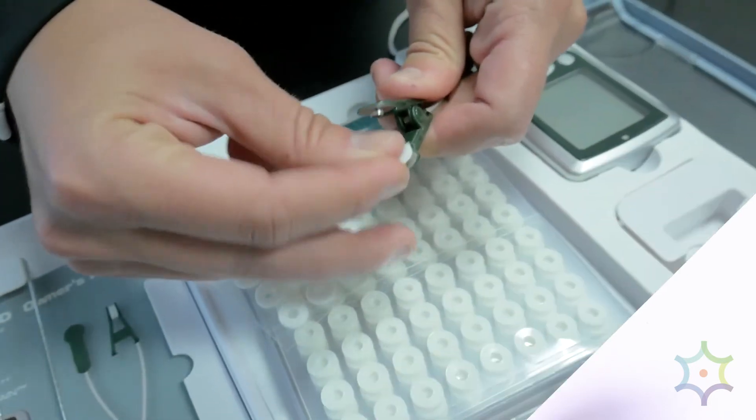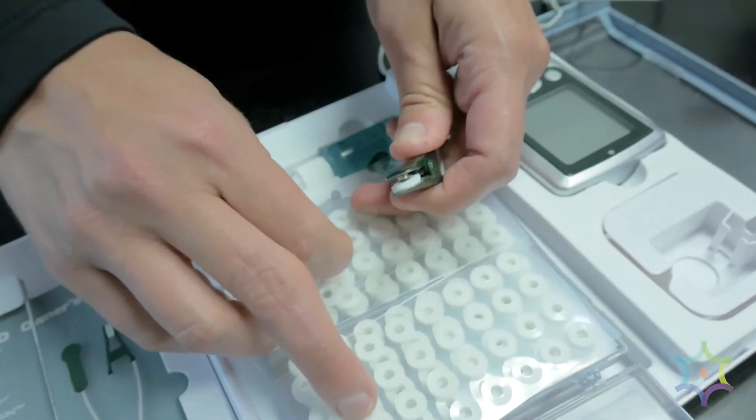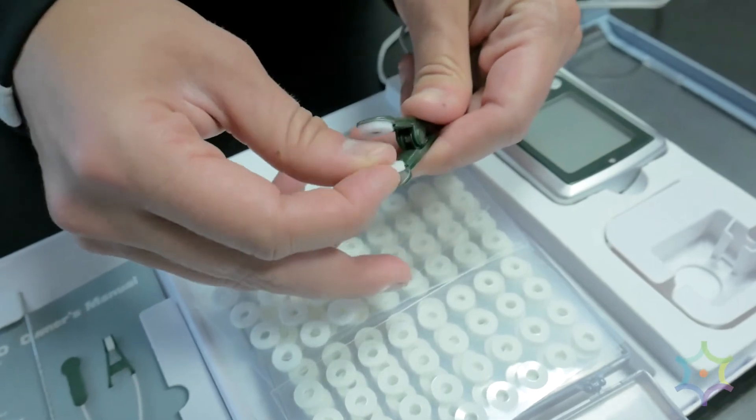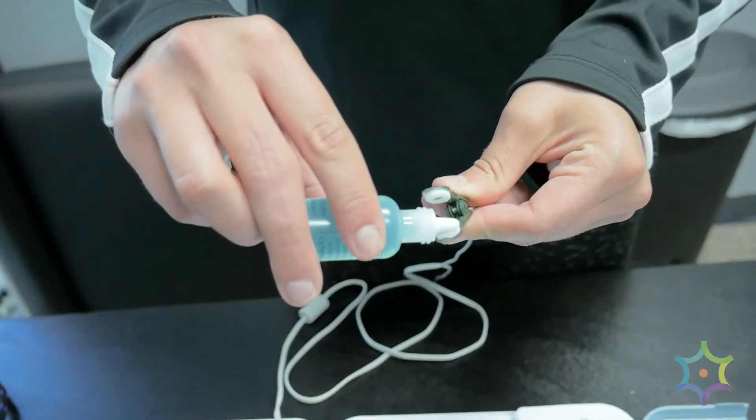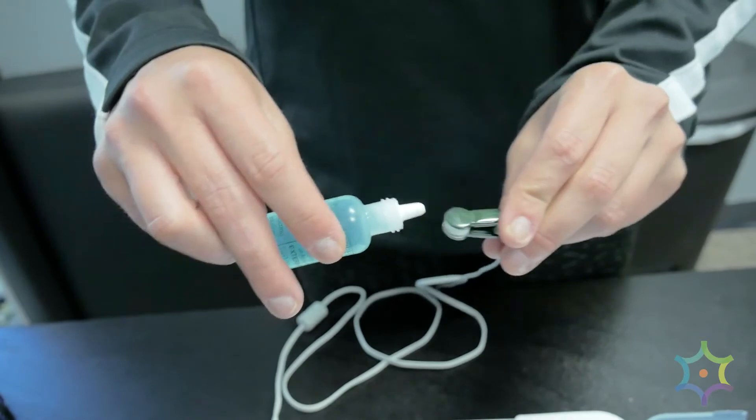When you receive TVNS, you will place padded ear clips on your ears, sort of like earrings. These clips are covered in a solution that may make them feel a little wet.